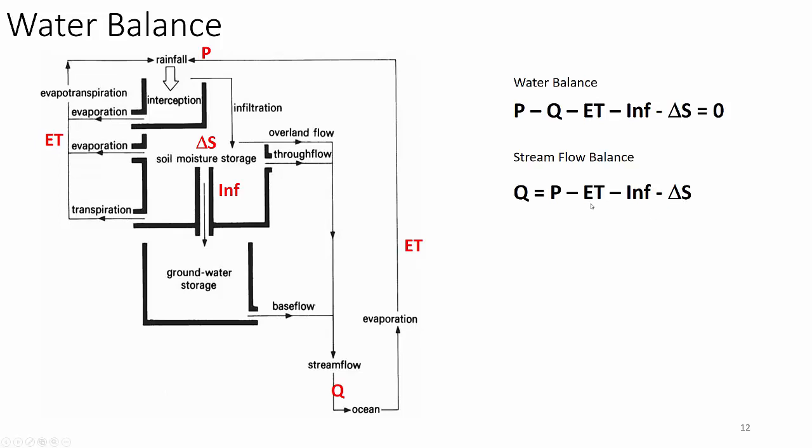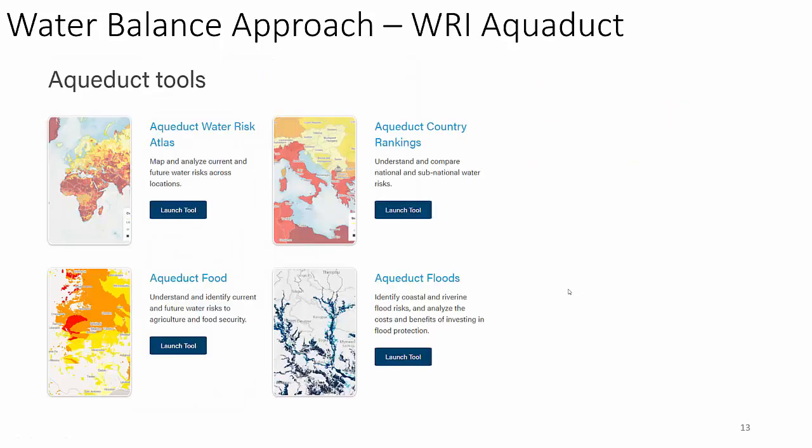This basically defines the rest of our course: Q, P, ET, infiltration, and change in storage — these are the things we'll cover in the remaining four weeks. The water balance approach is very powerful. I worked with the World Resources Institute over the last 10 years to develop and conceptualize a geospatial water balance modeling and visualization tool called Aqueduct. You'll have a link to it on the course webpage and in Blackboard. Aqueduct is an incredibly powerful mapping system for assessing water risk, food risks, country rankings, and floods.